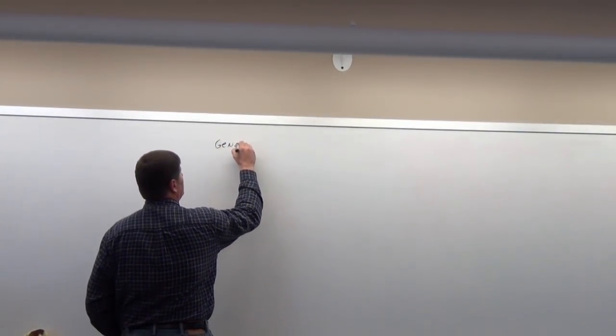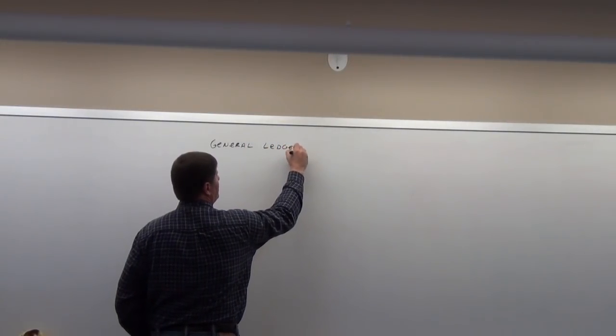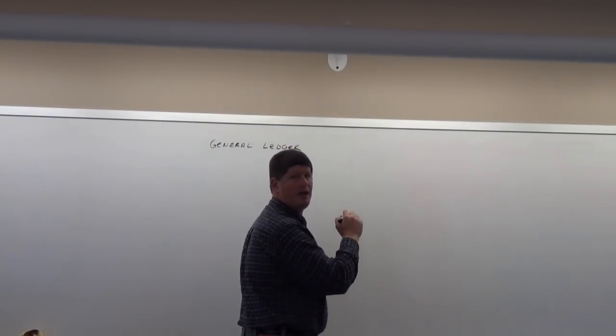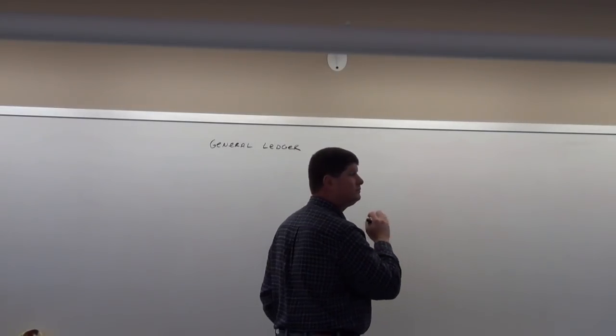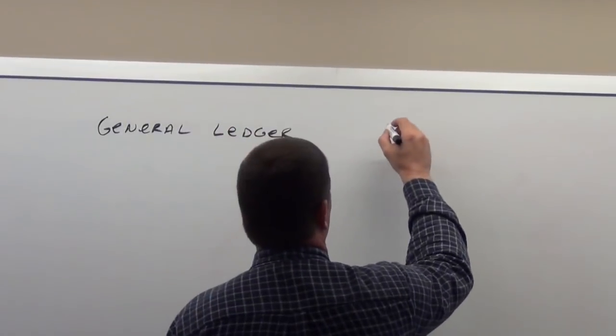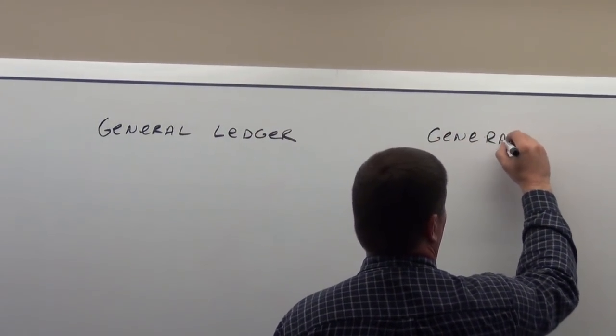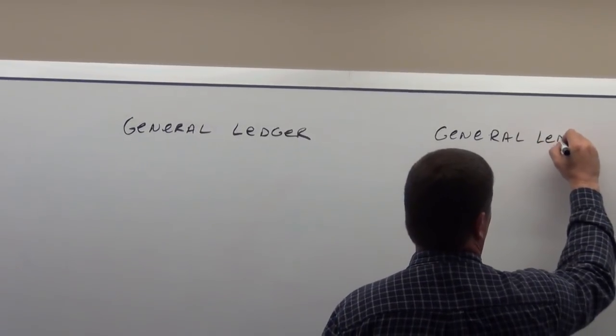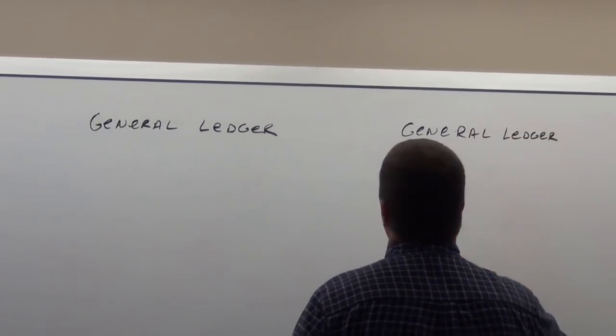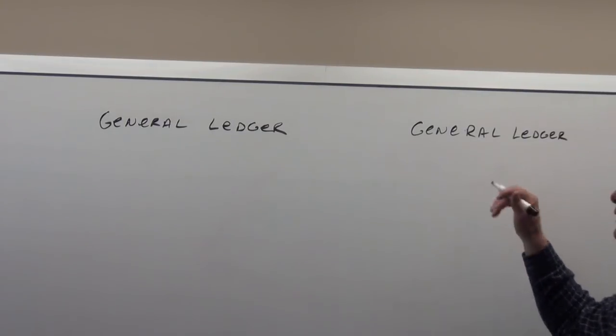Right now we know we have a general ledger and we know that we have a general journal. So this is what we've historically worked with - the general journal and general ledger.